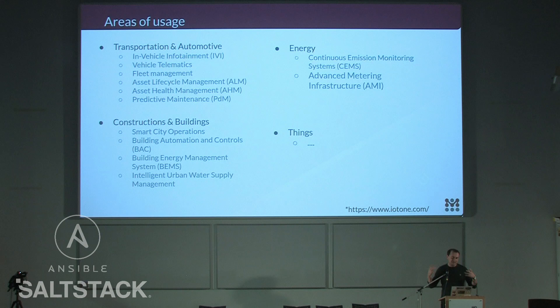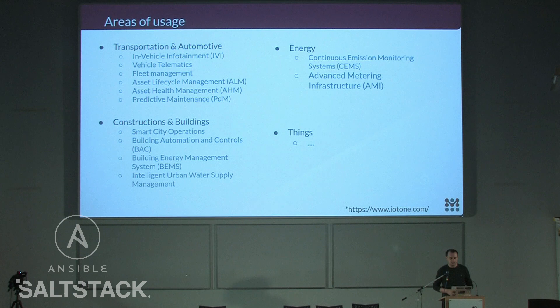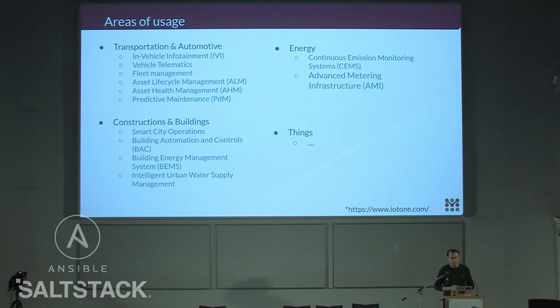The area of usage grew out of domains where transportation and automotive have been using these technologies for quite a long time — vehicle telematics, fleet management, predictive maintenance. You monitor a fleet of vehicles to predict maintenance and to monitor where they are. More and more it's becoming common to run Linux in vehicle infotainments. Construction and buildings is also a very popular domain: smart city operations, smart buildings, building automation, monitoring — similar applications in all of them.